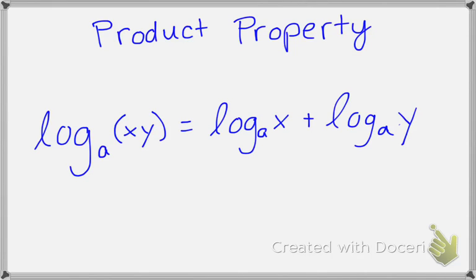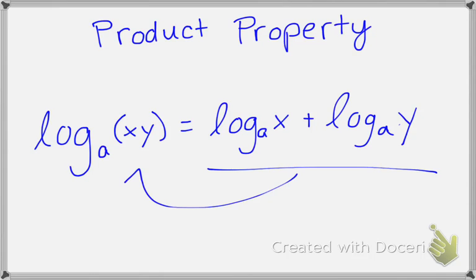The first is the product property. If you have a logarithm where you are multiplying two values, you can expand them into two or more logarithms using addition. You can also do the same property backwards — if you have two logarithms separated by addition, you can combine them by multiplying the two values, and then you have one single logarithm.